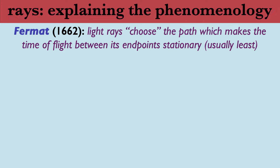Why should rays behave the way they do? A remarkable proposal came from Fermat — the same person who had the Last Theorem — that light rays choose the path which makes the time of flight between the endpoints stationary. If the light ray starts here and finishes here, a straight line minimises the time. It's minimal time, not minimal distance — and Snell's law, where the refractive index changes the speed of the wave, wouldn't hold if it were minimum distance. It's mysterious, but it explains the observations. This requires light to travel at a finite speed — not instantaneously. The first serious measurement of the speed of light was Rømer, a few years afterwards.